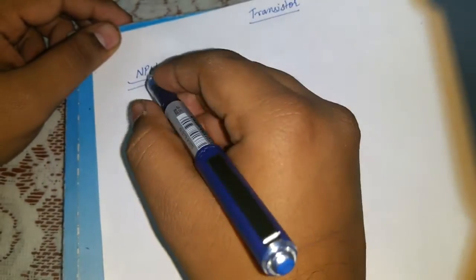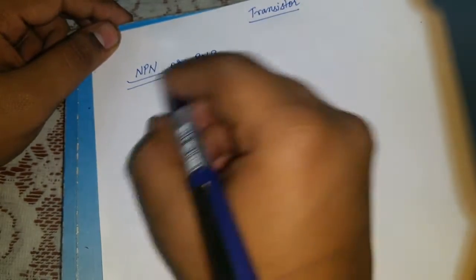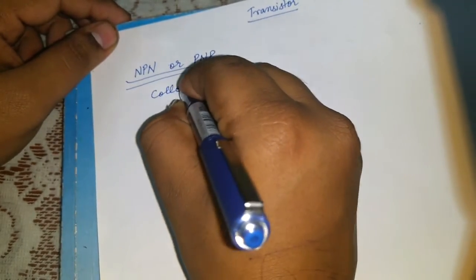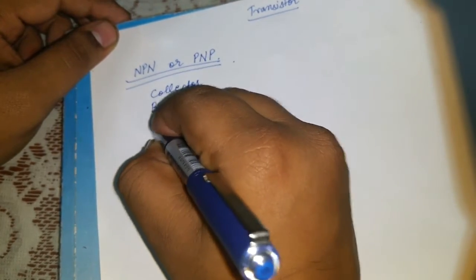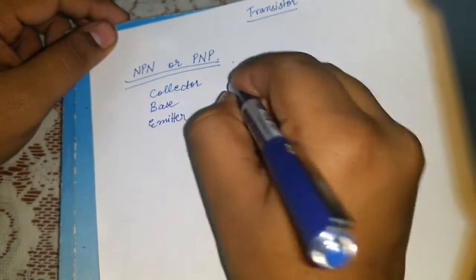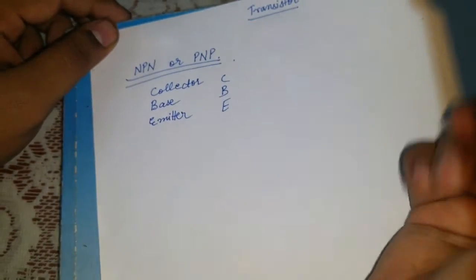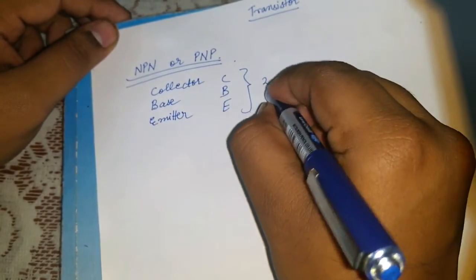Moreover, we can also find its collector, base and emitter, CBE of a transistor, as transistor is a three terminal device.